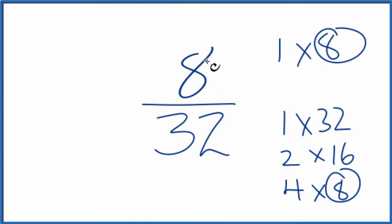So we'll divide 8 by 8, 32 by 8, and we'll have simplified 8/32. Let's move these over here.